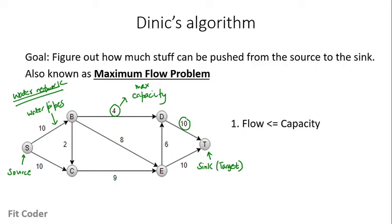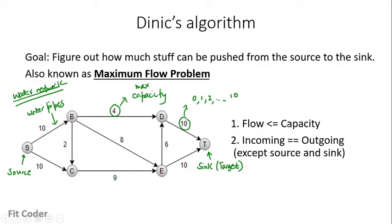For the edge D to T, the maximum capacity is 10, so the flow can be anything from 0 to 10 but cannot exceed 10. Every edge has the restriction that flow should be less than or equal to capacity. The second rule is that incoming equals outgoing — the water conservation principle. At each vertex, the amount of water incoming should equal the outgoing, except for the source and sink vertices where water flow begins and terminates respectively.